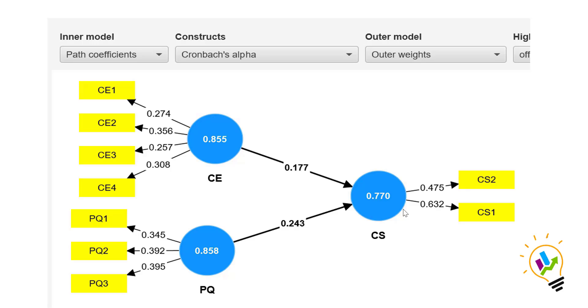After confirming that these two independent variables are significantly impacting customer satisfaction, we must see the path coefficient of each independent variable on the dependent variable. For example, here you can see CE is impacting 0.177 and PQ is 0.243. So we must select the minimum path coefficient value.